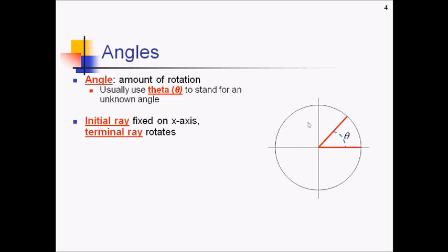Now we have two different rays that make up this angle. An initial ray, which is the ray that's fixed on the x-axis, and the terminal ray, right here, this is the ray that actually rotates to give you different angles on the circle. The circle is split up by the x and y-axis into four quadrants, and each of those quadrants is 90 degrees.